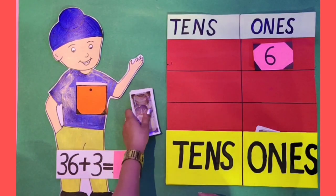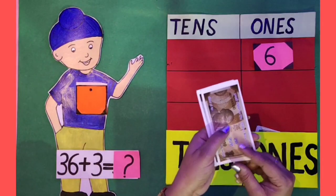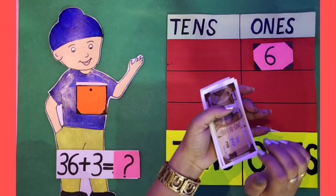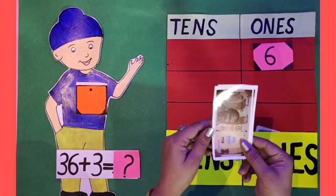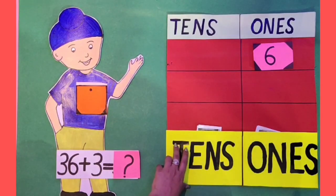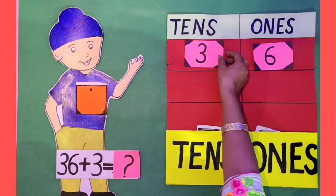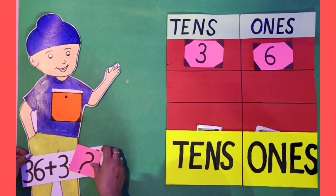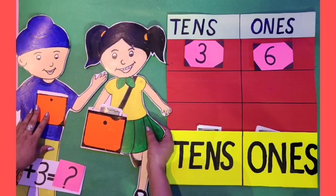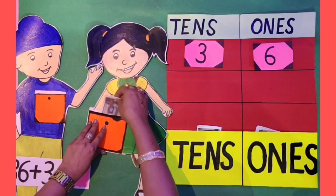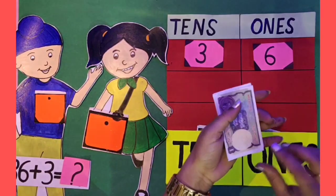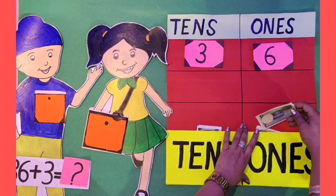Now, let's count 10 rupee notes. 1, 2, 3. There are 3 ten rupee notes. That means 3 tens. Now, kids, we know Arpan has 3 rupees with her. 1, 2, 3. That means 3 ones.